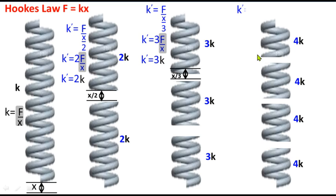Now go for the fourth one. This has the capability of getting extended only x by 4. So the equation becomes k' is equal to F divided by x by 4.